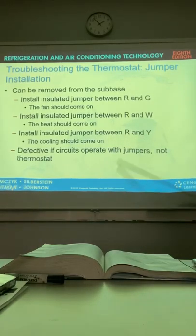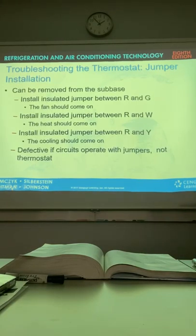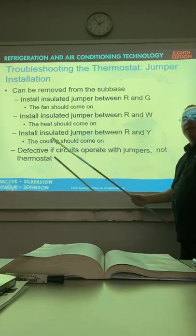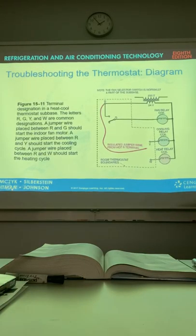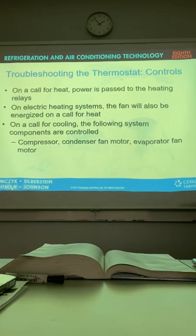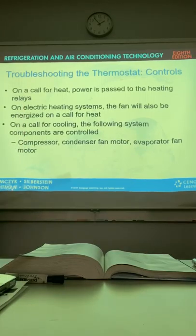Now, it says it can be removed from the sub base. Put the jumper between R and G. The fan should come on. Between R and W, the white wire, heat should come on. Between R and Y, the cooling should come on. It's defective if the circuits operate with the jumpers. Then, the thermostat. If it doesn't turn on, it's not the thermostat. That's the way that works. You will have all of this in your lab manual in the lab.